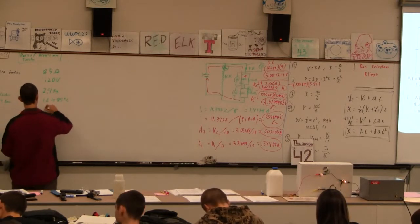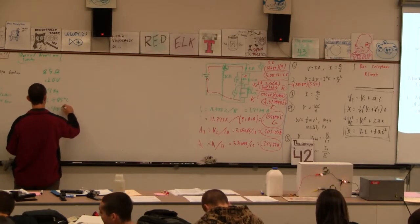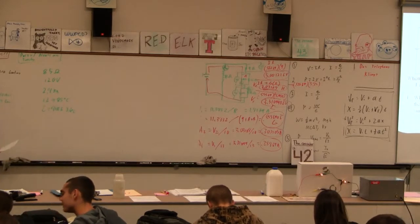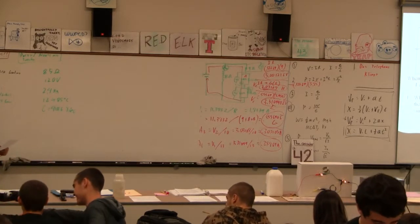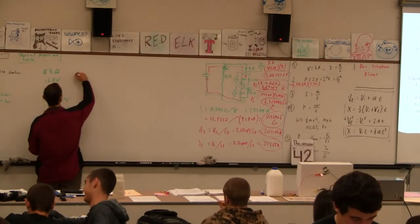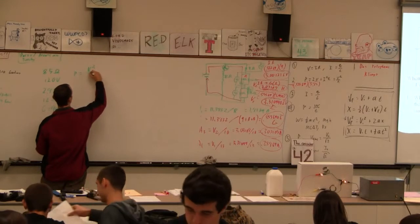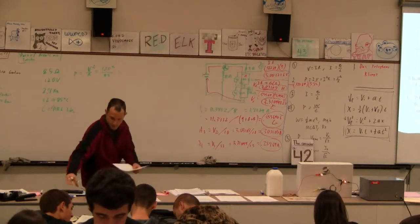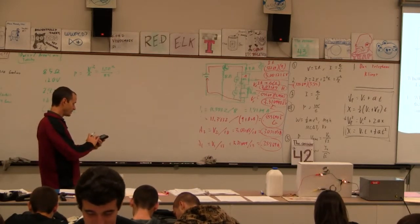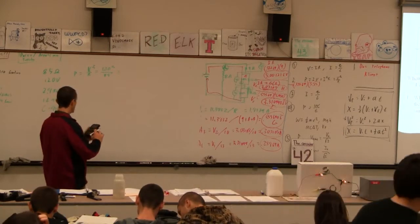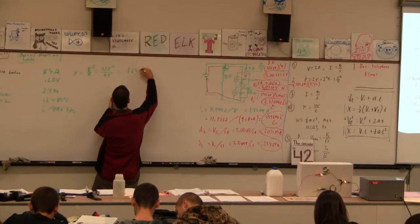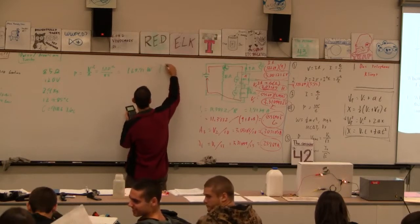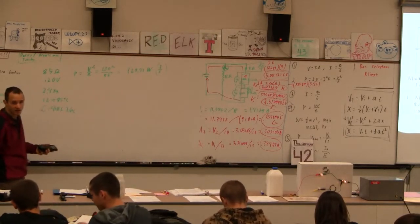And then we know the specific heat and this is joules per kilogram degrees Celsius. So the first thing I'm going to do is figure out the power. The power is going to be V squared divided by R, so that's 120 squared divided by 85, which is going to be a lot. So 120 squared divided by 85 is 169.41 watts, which is a joule per second. That's how many joules it's going to pump into the system every second.